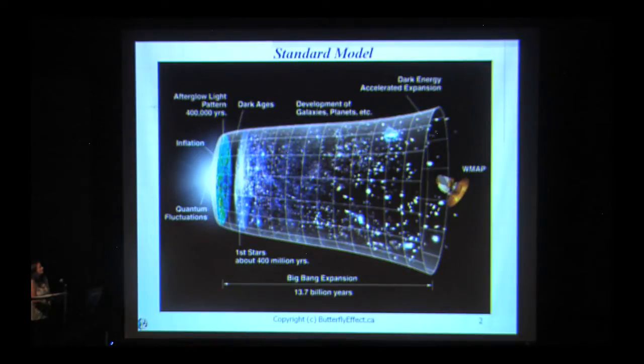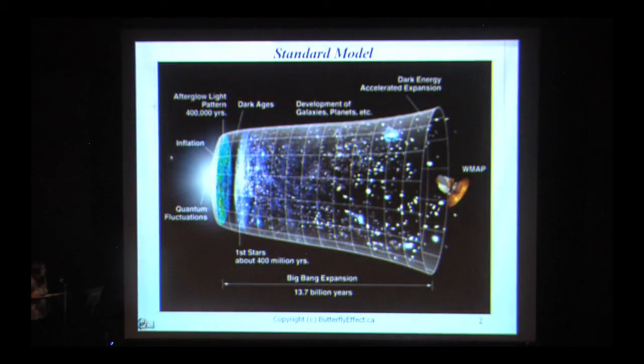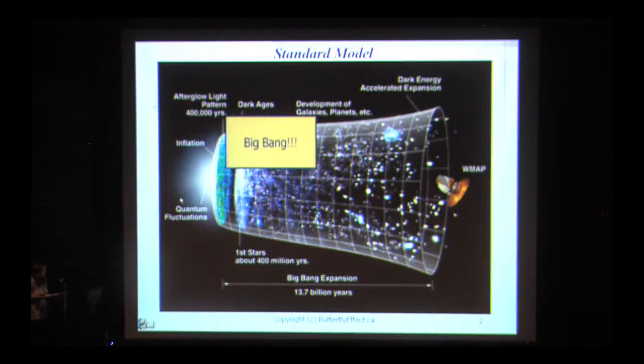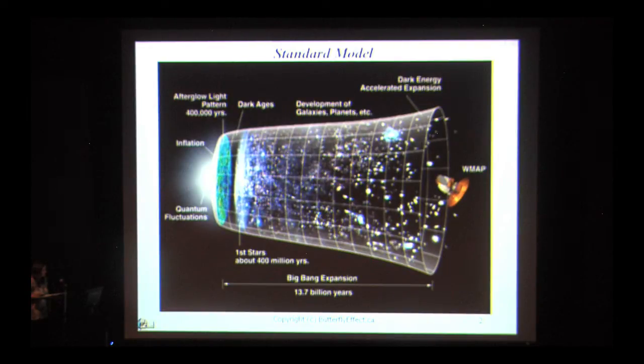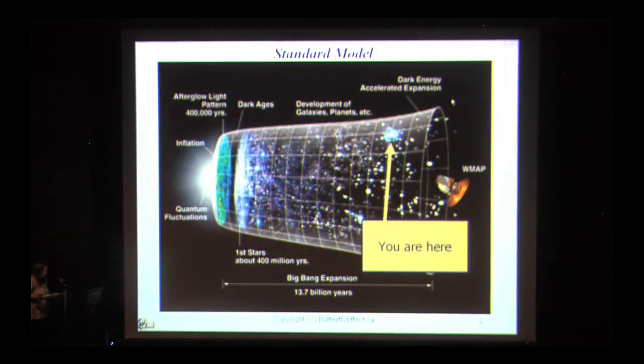The current standard model of the universe suggests that the universe, the whole universe, formed around 14 billion years ago in a huge explosion called the Big Bang. It's at that time that all the matter and energy in the universe was created. This graphic is commonly used to describe the creation and evolution of the universe. It starts with quantum fluctuations, which generate a period of inflation. Then, there's a dark period, followed by formation of the first stars. Eventually, galaxies with stars and planets begin to form, followed by the accelerated expansion of the universe, which is where we are right now. This is the standard model of the creation of the universe. This is what we're taught, and this is what most cosmologists believe to be true.